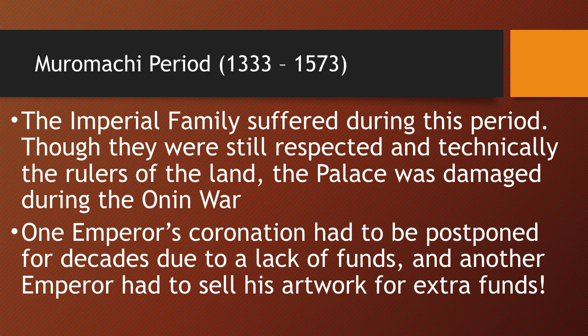The imperial family, who is still around, suffers during this period. They are still respected as divine and technically the rulers of the land, but the palace was damaged during the Onin War. The imperial family suffers from financial difficulties. In fact, one emperor's coronation had to be postponed for decades because there was no money, and the emperor had to sell his artwork to get extra funds.